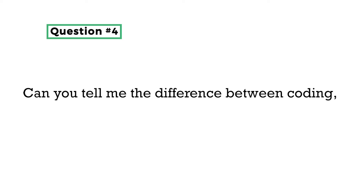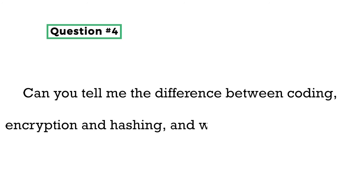Question four: can you tell me the difference between encoding, encryption, and hashing, and why they are important? Encoding means communicating a message in a way that the receiver will clearly understand. Hashing is an integrity method to validate data. Encryption is making data unreadable by anyone except those who know the secret shared key.